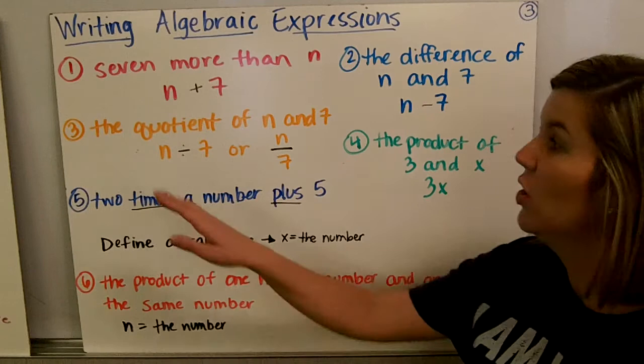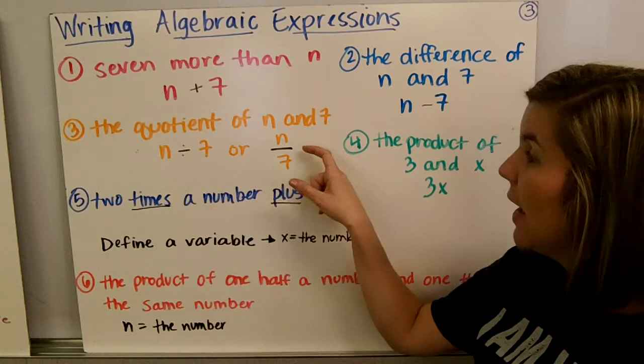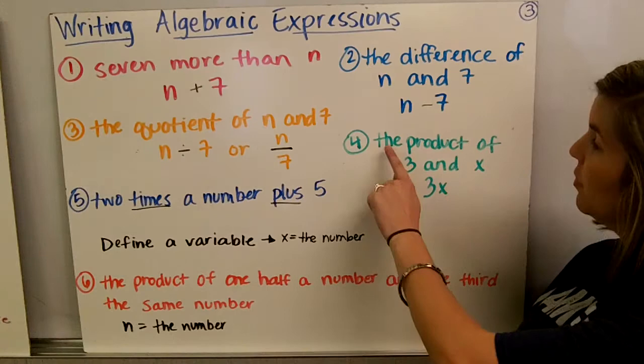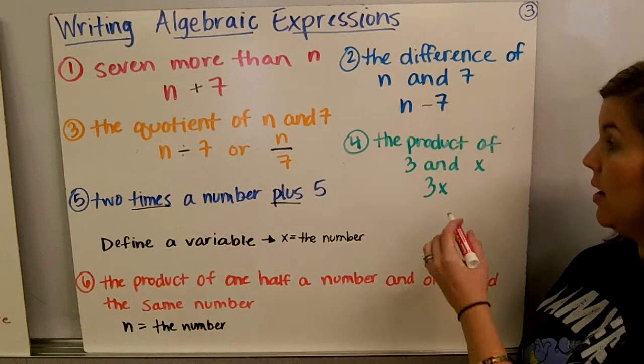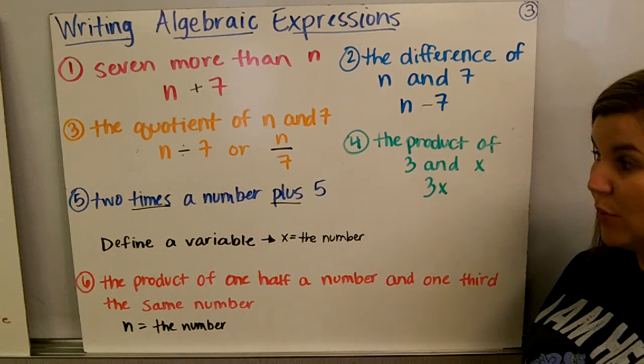The quotient of n and seven: n comes first or you can put it on top, and seven. Quotient is a division word. Remember this division sign and a division bar for fractions mean the same thing. Number four, the product of three and x: when we multiply a number and a variable, we don't have to have a times symbol or parentheses if it's a number times a variable, so this would be just 3x.